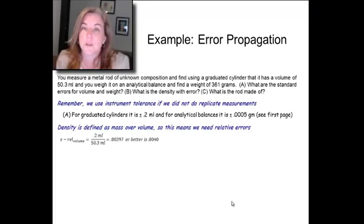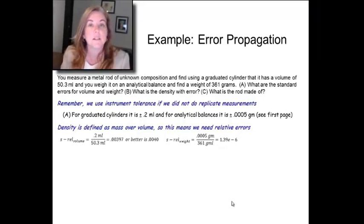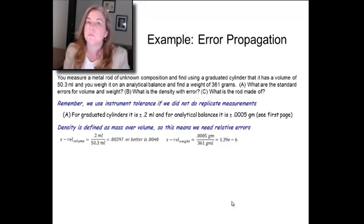So, for the volume, it's going to be 0.004, and for the weight, it's going to be 1.39 times 10 to the minus 6. Not surprisingly, the analytical balance's error is much, much, much smaller than the graduated cylinder's.